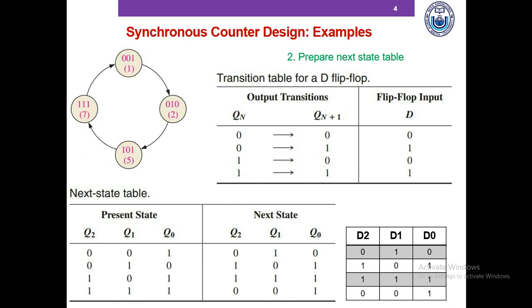To determine D2 in the first row of the next state table, we ask what values of D2 can cause the 0 to 0 transition of Q2 as it goes from present state to next state. For the second row, we ask what values of D2 can cause a 0 to 1 transition of Q2. We look into the transition table and see that D equals 1 leads to a 0 to 1 transition, so we set D2 equals 1. In this manner, we complete the columns of D2, D1, and D0 in the next state table.